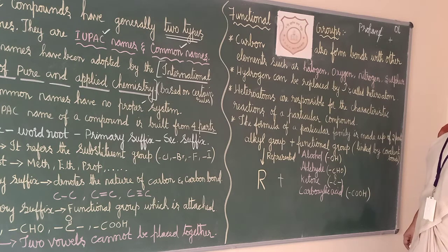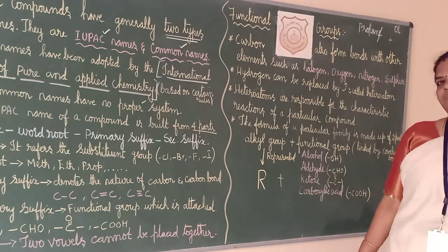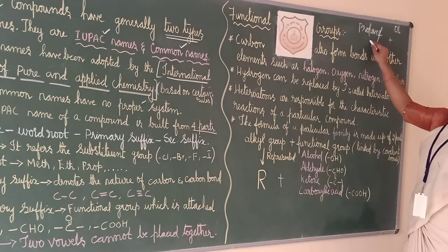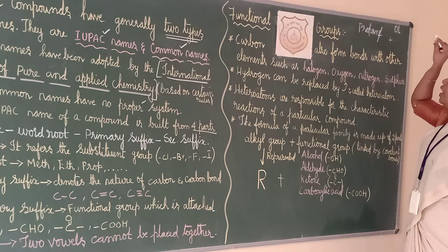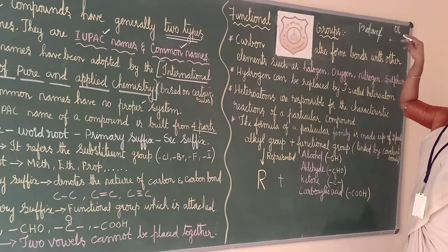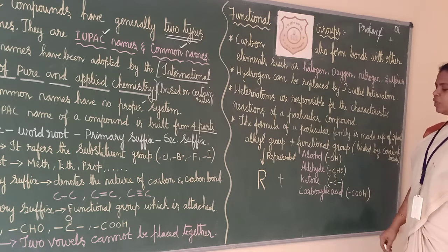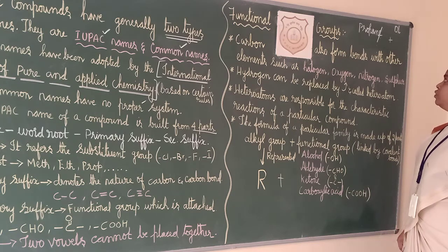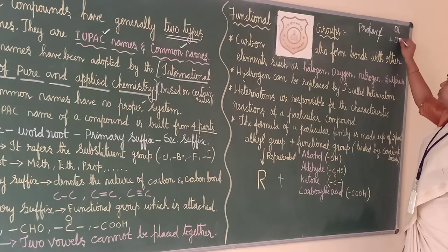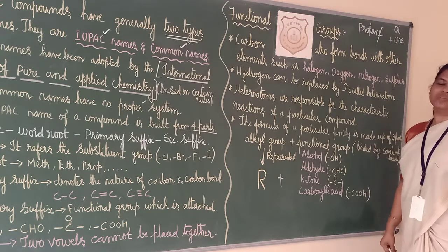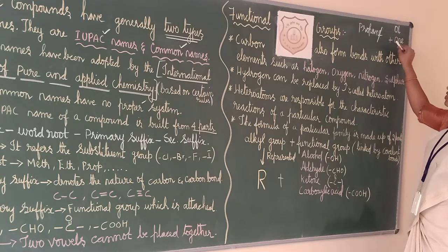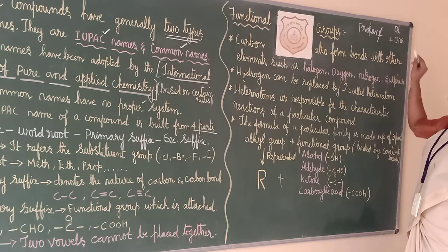We will call it propanol. The next functional group is aldehyde. For aldehyde, propanal and ethanal should be formed — aldehyde suffix should be added the same way. Then ketone — if adding ketone as a functional group, similarly strike the final E vowel and write propanone, spelled L-O-N-E.